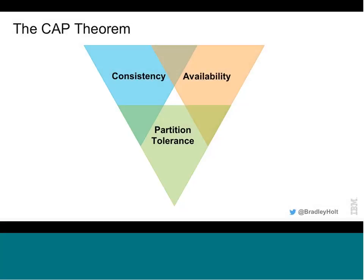One way to reason about these changing constraints is with what's called the CAP theorem. This is just one model — not the end-all, be-all answer — but it's a useful tool to help us think about these constraints and, when we're trying to choose a database, help us pick one that meets our particular needs. The basic idea of the CAP theorem is that you can choose up to two of these three properties: consistency, availability, and partition tolerance.